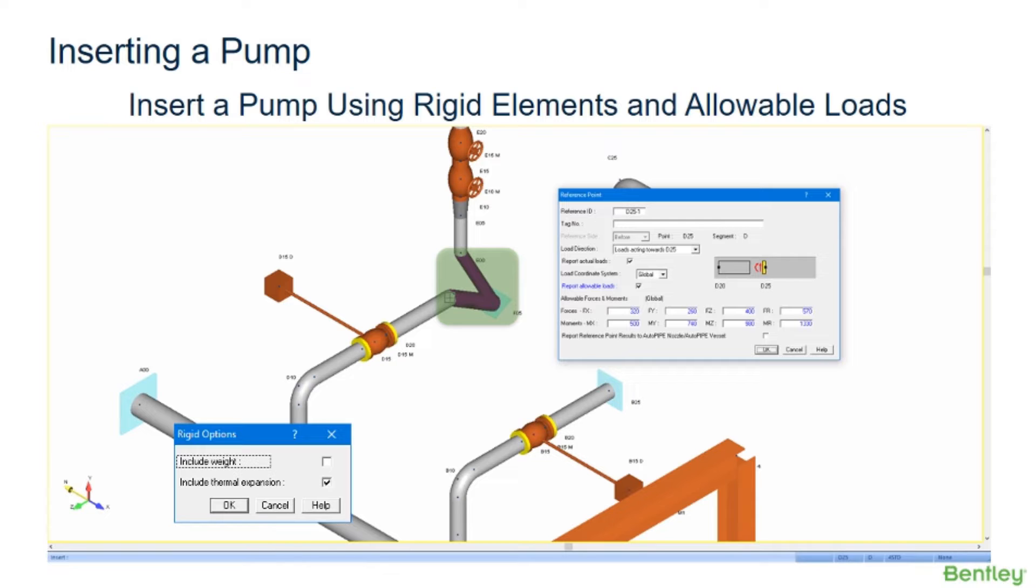This will help account for nozzle thermal movements automatically by specifying a temperature for the rigid piping representing the equipment. This feature is very useful to create a comparative load ratio report for any nozzle or connection to a vessel or rotating equipment respectively, which has manufacturer-defined limits.